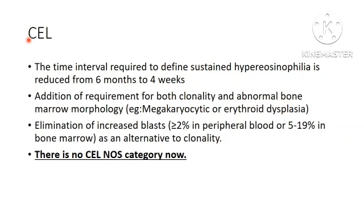There are also certain changes in the diagnostic criteria of chronic eosinophilic leukemia. The time interval required to define sustained hypereosinophilia has been reduced from six months to four weeks, with the addition of a requirement for both clonality and abnormal bone marrow morphology.